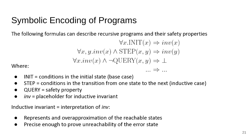This interpretation is an over-approximation of reachable states, precise enough to prove the unreachability of the error state. We can actually have more constraints than just what we see here, but this is a canonical example of a CHC system.